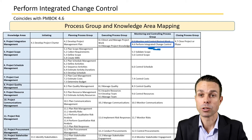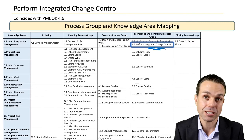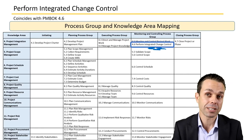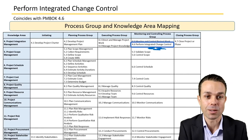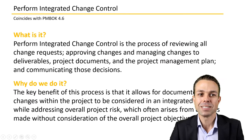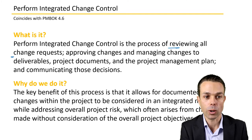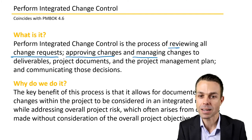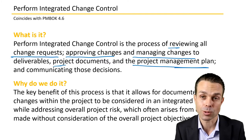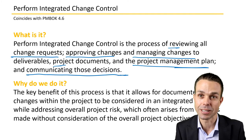So now we're monitoring the project, we're controlling the project, and we might need to make changes to baselines and documents like scope, schedule, cost, or even quality in some cases. And those changes need to go through the proper procedure and then go back into the project management plan. So what is Perform Integrated Change Control? It's the process of reviewing all change requests, approving changes, and managing changes to deliverables, project documents, and the project management plan itself — which was a baselined document — and communicating those decisions to the appropriate stakeholders.